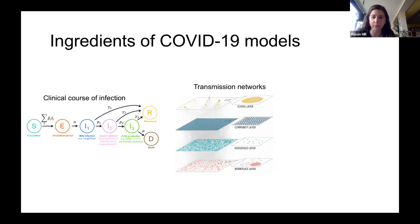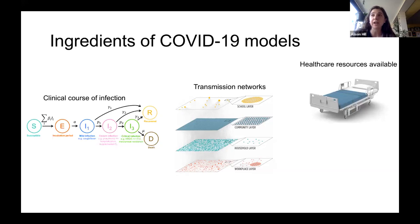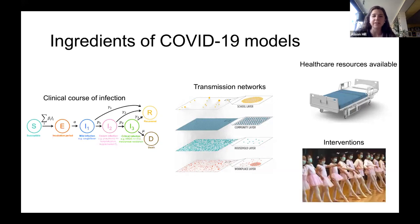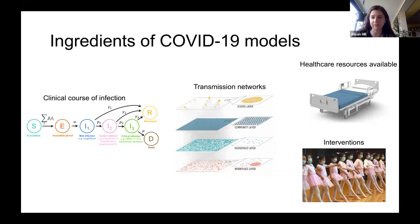Another really important ingredient is transmission networks — understanding who transmits to whom, who can transmit to whom, and who did transmit to whom. There's a lot of unknown information in these transmission networks and this is one of the most difficult parts of infectious disease modeling. Looking at healthcare resources has been a big part of modeling COVID-19 — what do we have available in our healthcare system, how does that depend on where you are, and how does it relate to the resources we might need depending on who progresses to which stage of infection. Then of course another part of models is looking at interventions — which interventions might work better than others, how strong they need to be, how long they need to be implemented, and can we estimate how efficacious they are retrospectively.